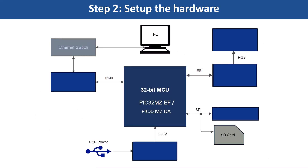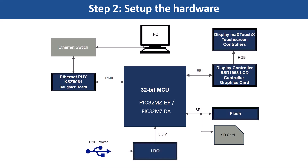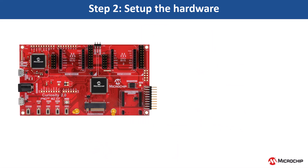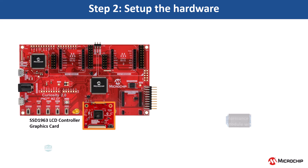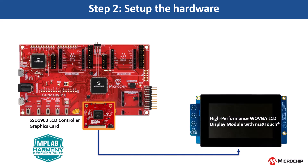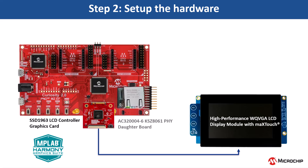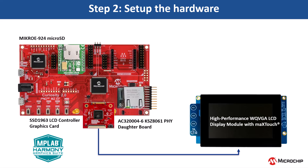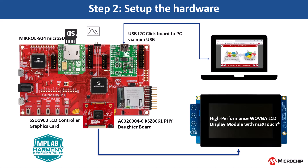Let us set up the hardware as shown to test functionality. The hardware setup involves connecting the SSD1963 LCD controller graphics card and the high-performance WQVGA LCD display module with MaxTouch technology for displaying images. Ethernet connectivity is enabled through the above-mentioned daughterboard. Image storage is facilitated by inserting a microSD card into the micro924 microSD click mounted on the microbus slot 1.